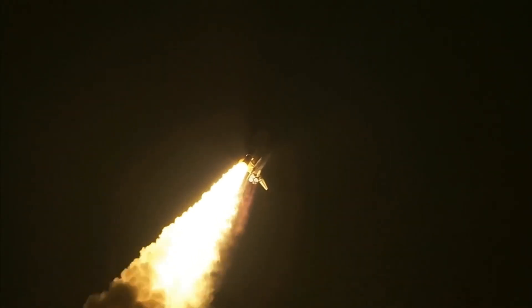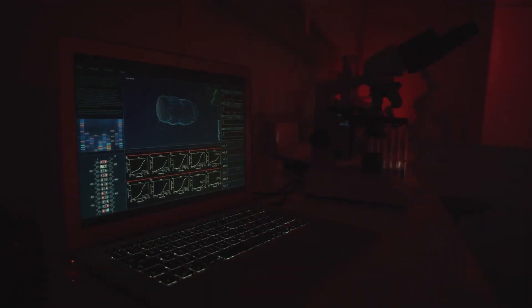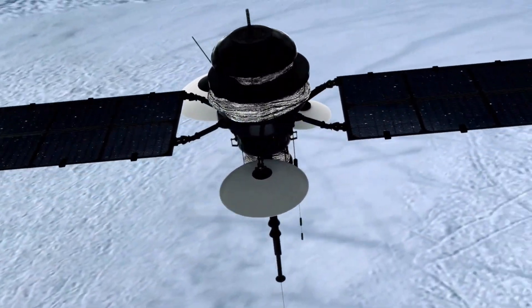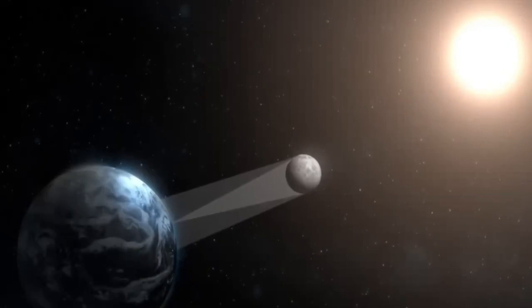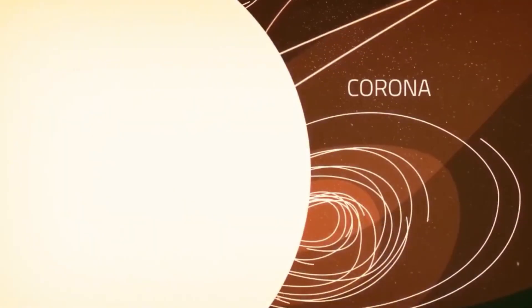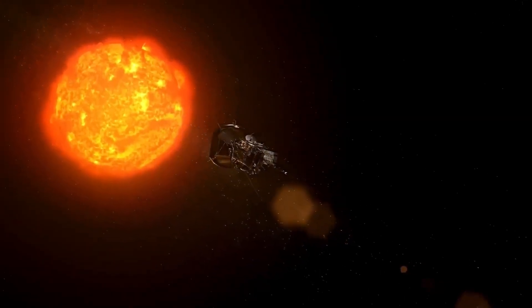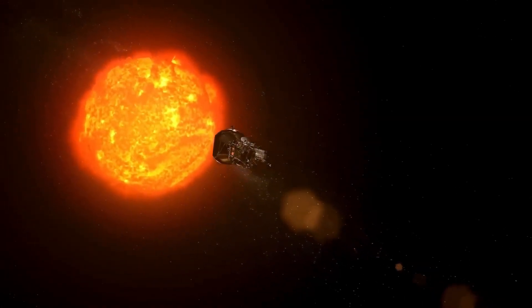Two years earlier, the data collected by Parker Solar Probe had already provided the experts with some big surprises. In particular, the discovery of so-called switchbacks, short-lived, sharp bends in the particle streams of the solar wind that almost redirect back to the sun. How these structures are formed remained unknown for a long time. In fact, it took another three years before the background to the mysterious switchbacks could be deciphered.